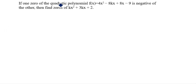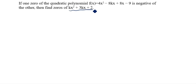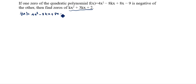If one zero of the quadratic polynomial f(x) = 4x² - 8kx + 8x - 9 is negative of the other, then find the zeros of kx² + 3kx + 2.